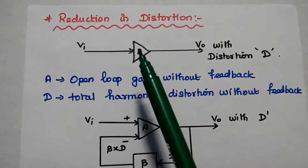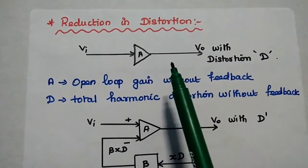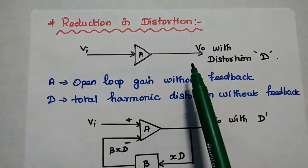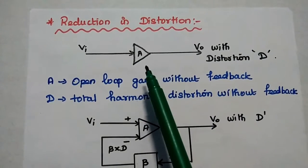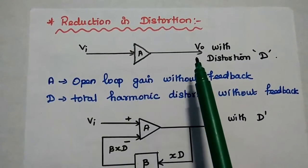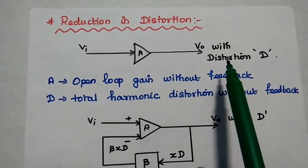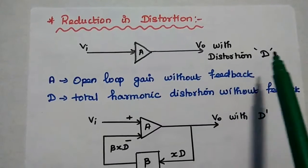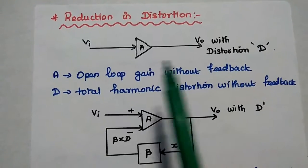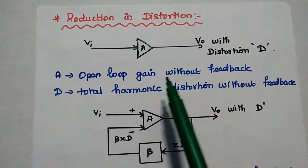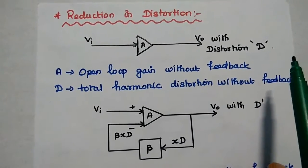The next property is reduction in distortion. We discuss the effect of negative feedback on distortion reduction. First, consider an open-loop amplifier: an input is given and the output contains distortion D. A represents the open-loop gain without feedback, and D represents the total harmonic distortion without feedback. Any amplifier has some initial distortion.